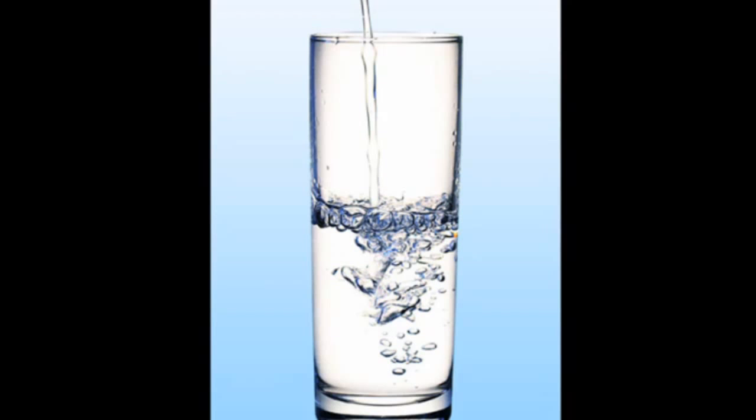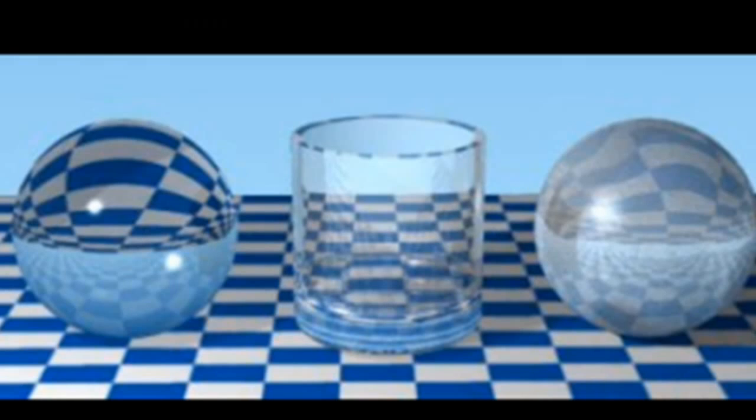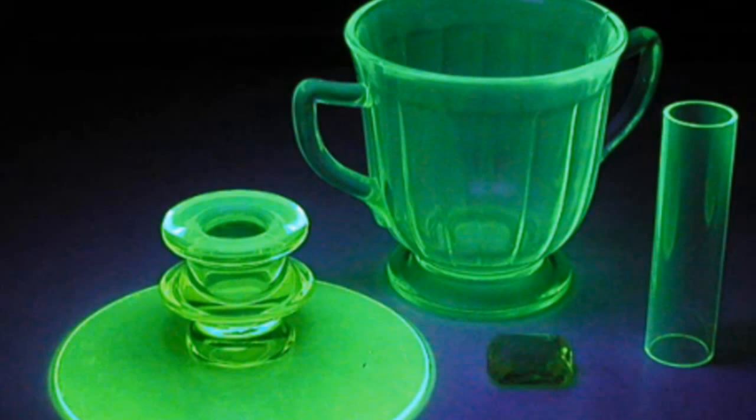For instance, glass is clear to us because it permits light in the visible frequency range to pass straight through it, but move a little higher in the spectrum to ultraviolet and glass is no longer see-through.